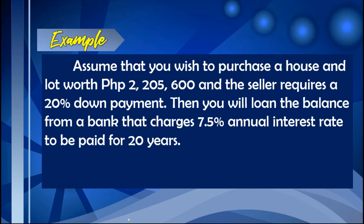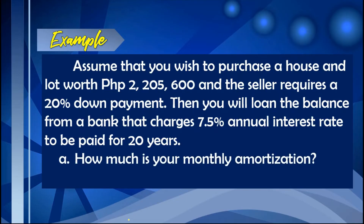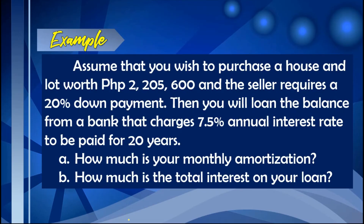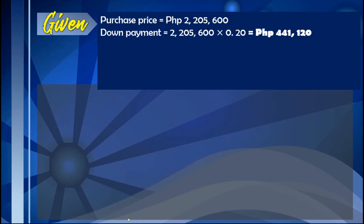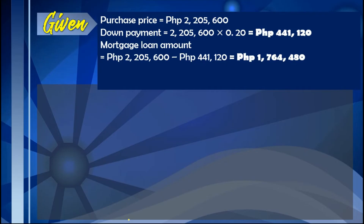Going back to our example: you wish to purchase a house and lot worth $2,205,600 with a 20% down payment of $441,120, giving a mortgage loan amount of $1,764,480. You will loan the balance from a bank that charges a 7.5% annual interest rate to be paid for 20 years. The monthly interest rate equals 7.5% divided by 12, which is 0.00625, and the total number of payments is 20 years times 12 months, giving 240 months.